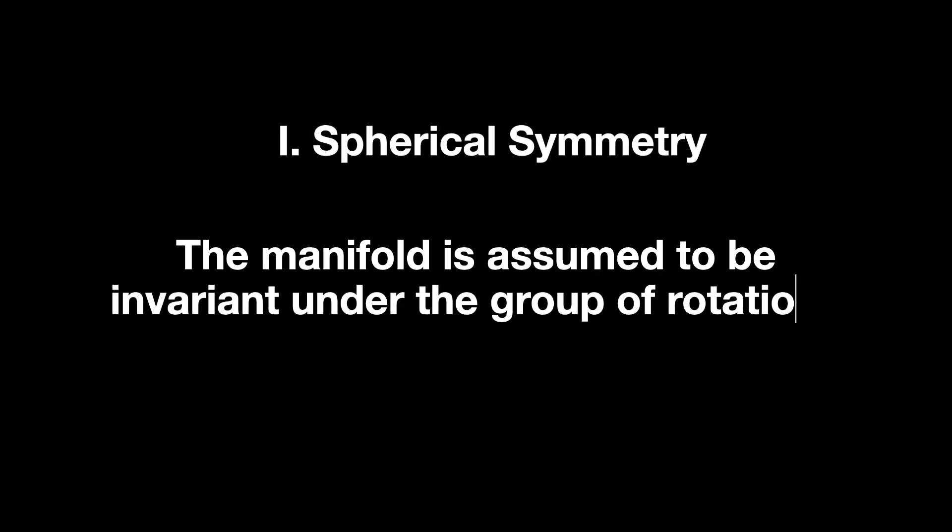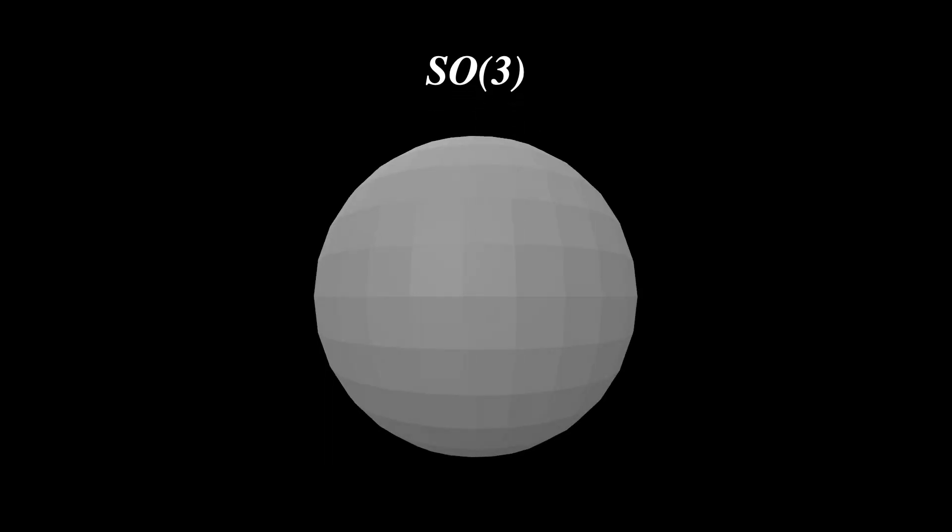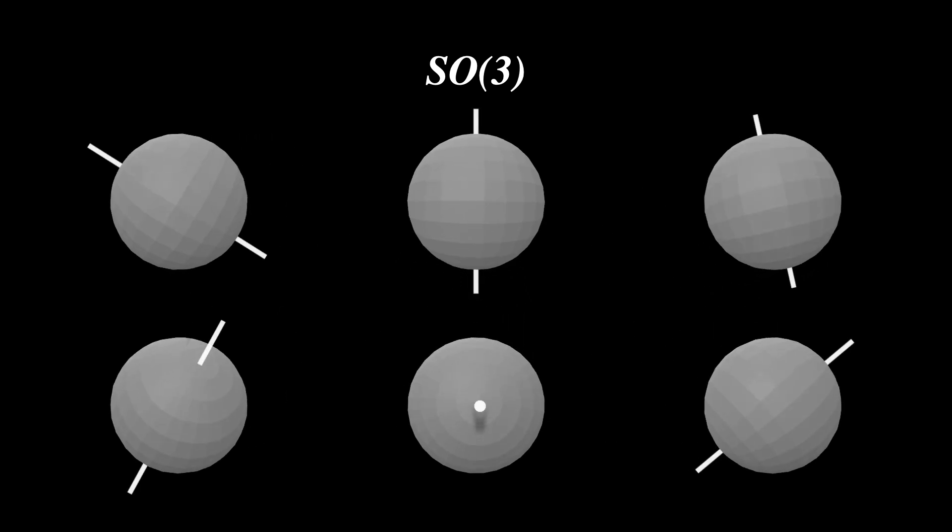Before anything though, let's see the assumptions used by Schwarzschild to find the specific solution. The first: spherical symmetry. The manifold is assumed to be invariant under the group of rotations SO(3). Group of actions SO(3) is the set of all possible rotations in 3D space. Imagine spinning a ball around any axis. SO(3) describes all the ways you can do that without changing the ball size or shape.